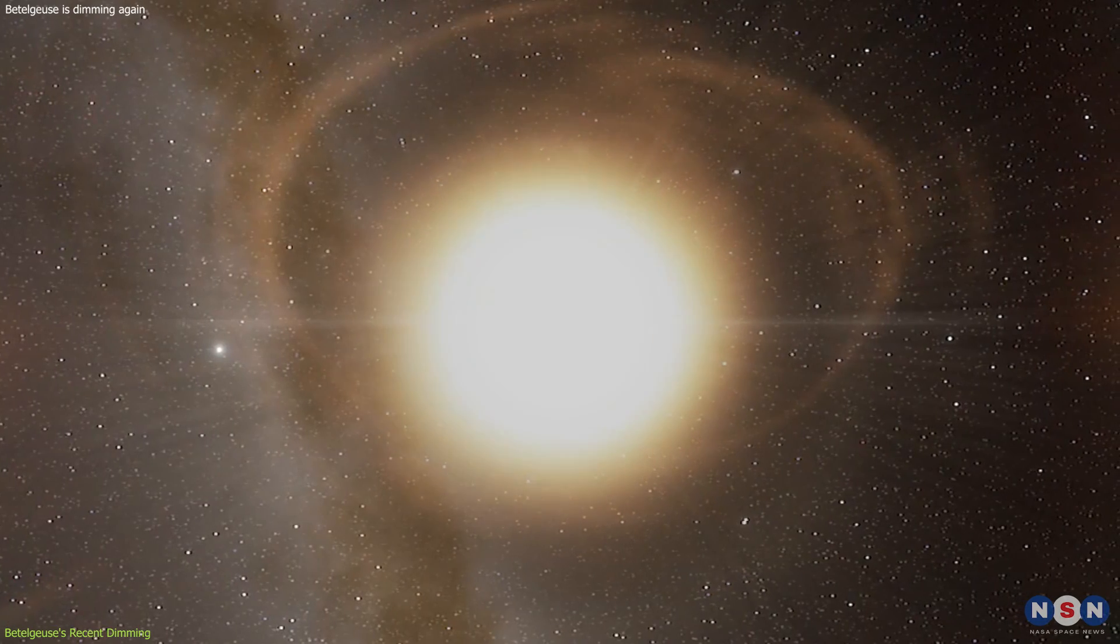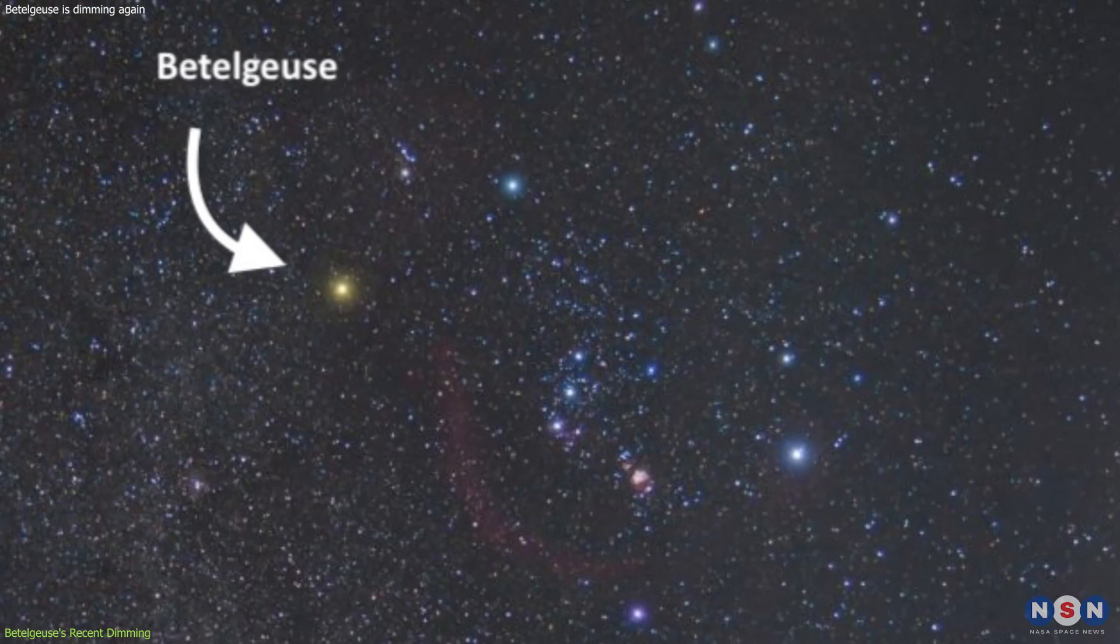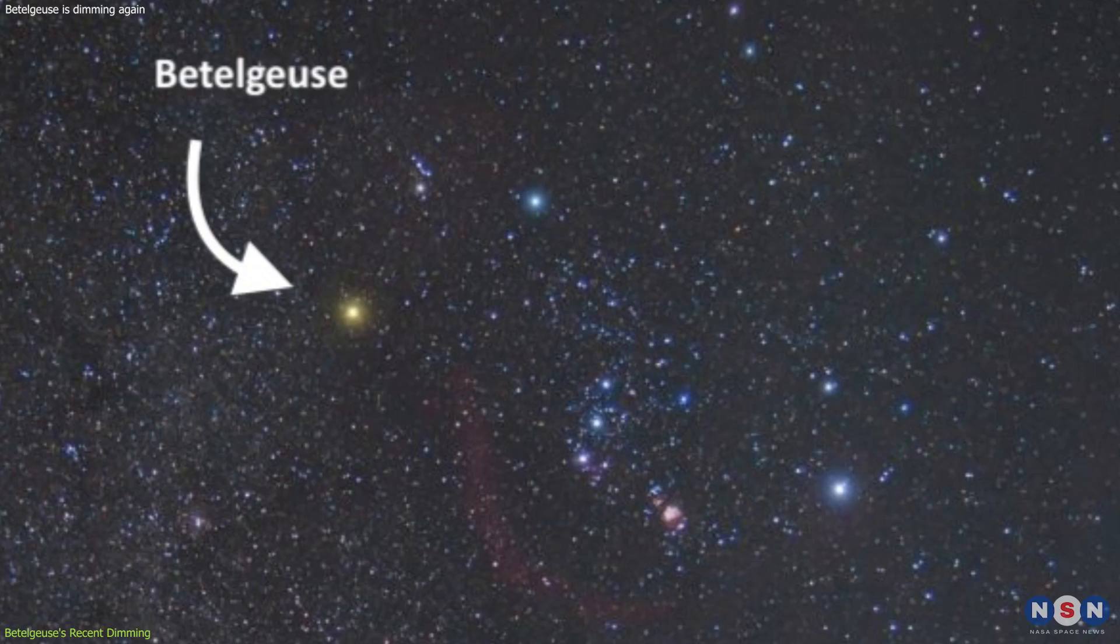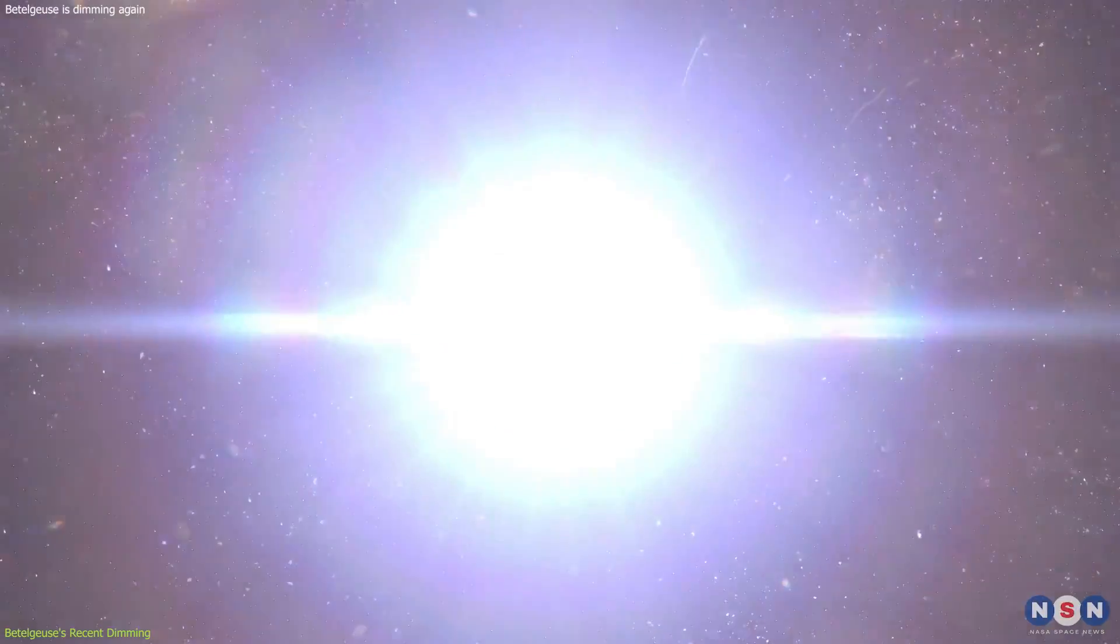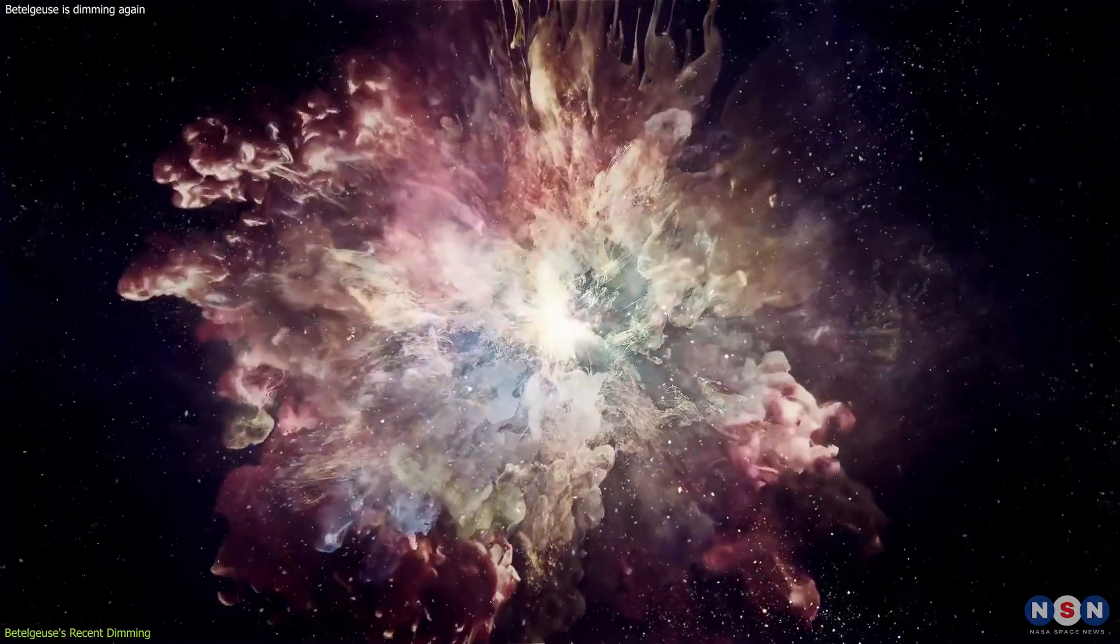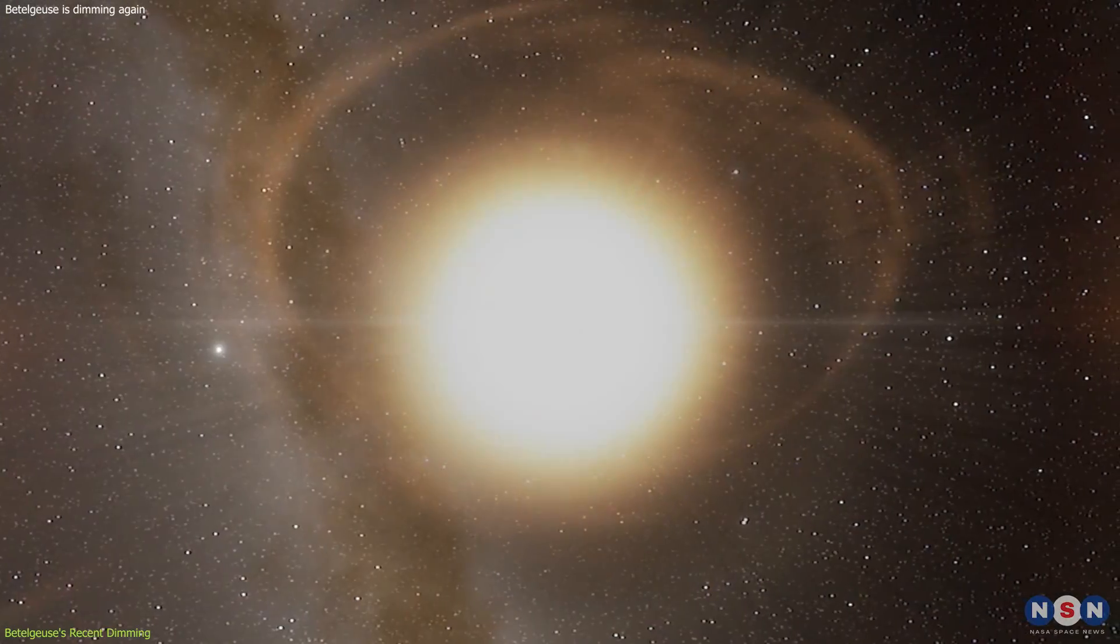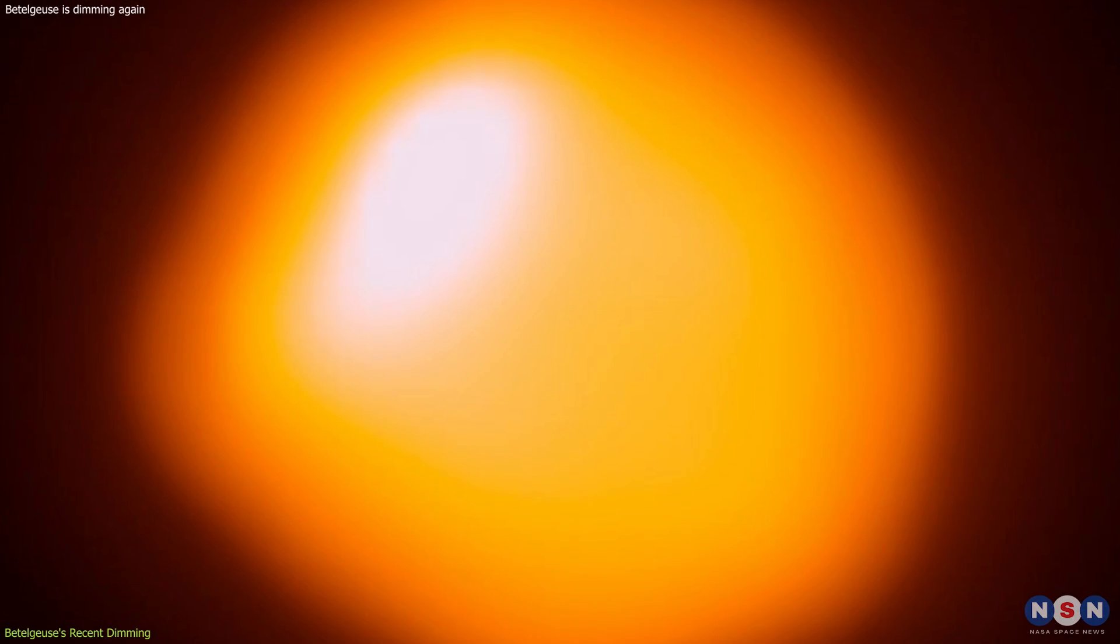The interest in Betelgeuse's dimming extends beyond the scientific community. As one of the brightest stars in the night sky, Betelgeuse has been a familiar sight for centuries. Its potential supernova would be a once-in-a-lifetime event, visible to the naked eye and providing a unique opportunity to study the death of a star up close. For now, the mystery of Betelgeuse's dimming continues to captivate astronomers and enthusiasts alike, as we wait to see what the future holds for this iconic star.